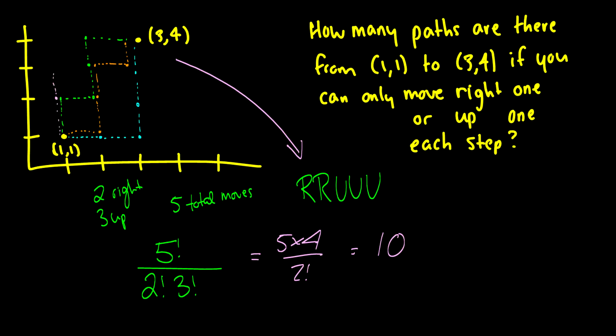It gets very confusing to draw out each individual path. Transforming it into a word that you know a formula for is a lot easier. This is what I mean when I say you have to extract what you're trying to solve into a question — this is the same thing as the databases example; we just happen to have a grid. I'll have a whole video of practice problems coming up next on permutations, including the fun problem of sitting people at circular tables.